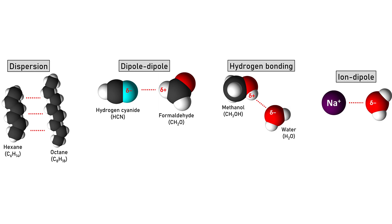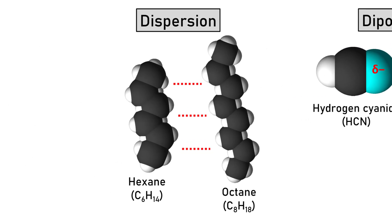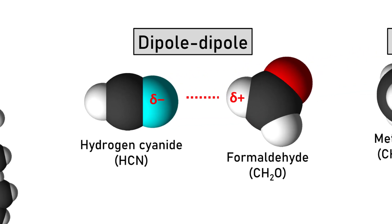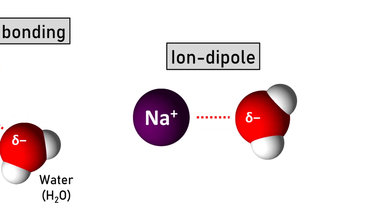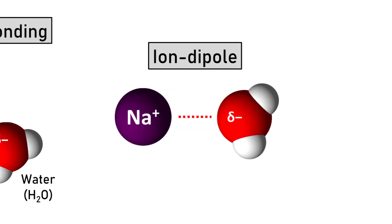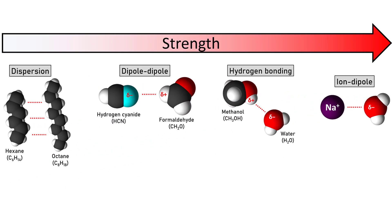There are four main types of intermolecular forces. Dispersion forces are caused by random fluctuations in electron density in a molecule. Dipole-dipole forces are caused by the partial positive end of one polar molecule being attracted to the partial negative end of a neighboring polar molecule. Hydrogen bonding is a type of super-dipole-dipole force that exists between molecules containing hydrogen chemically bonded to nitrogen, oxygen, or fluorine. And ion-dipole forces are attractions between a charged ion and the partially charged end of a polar molecule.